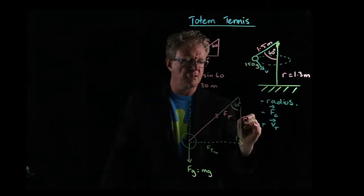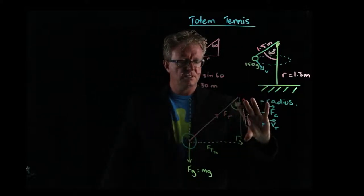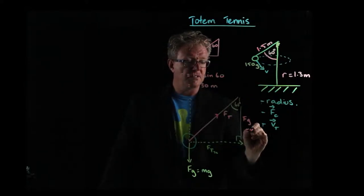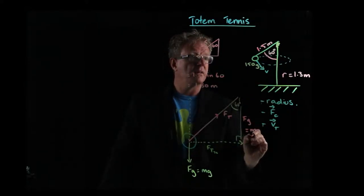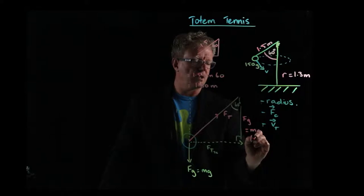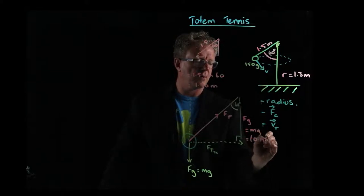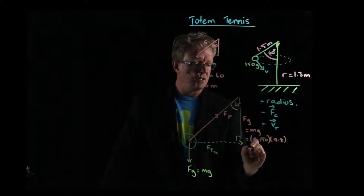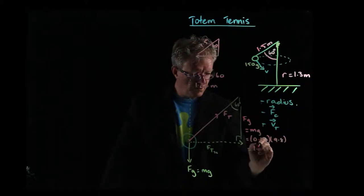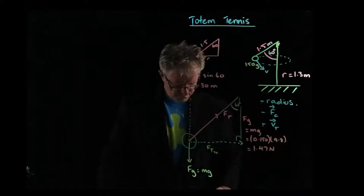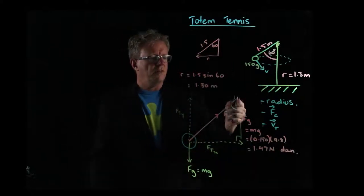So we could label this Fg here. And we know we can calculate that as mg. And the mass is 150 grams. So 0.15 times gravity, 9.8. And then we end up with 1.47 newtons.